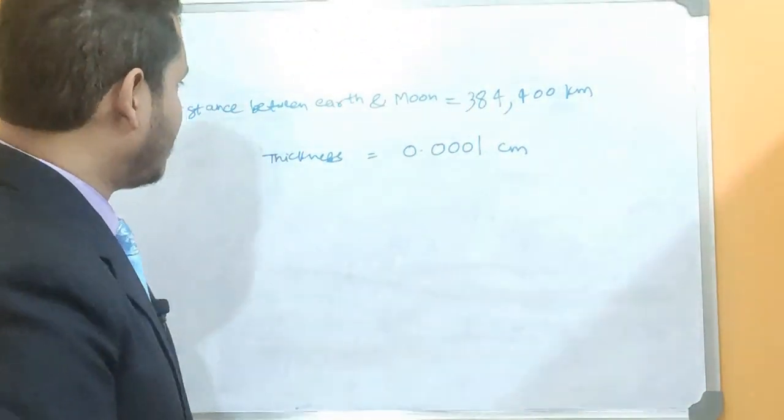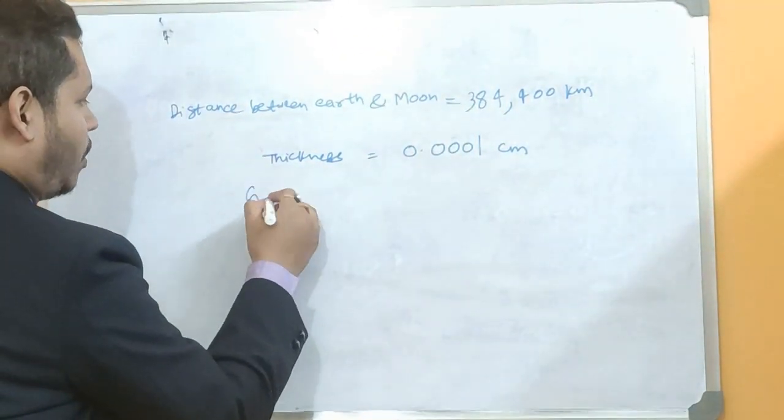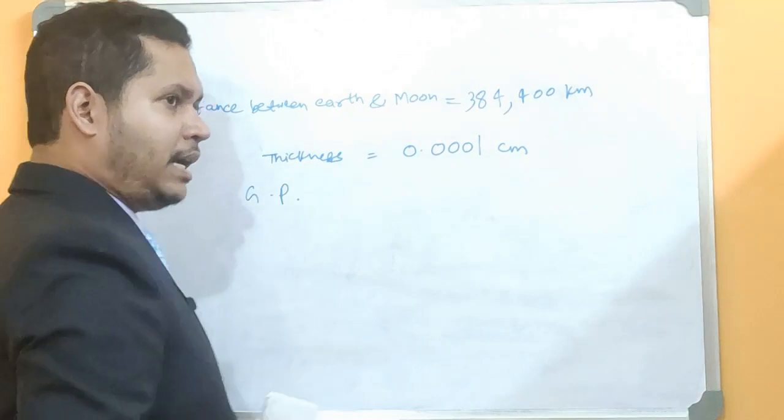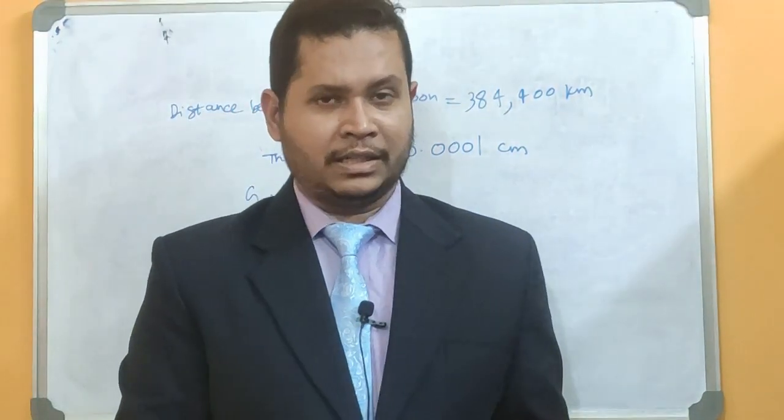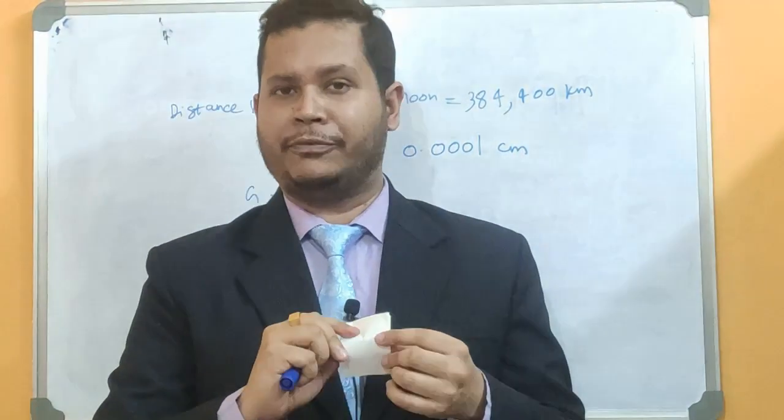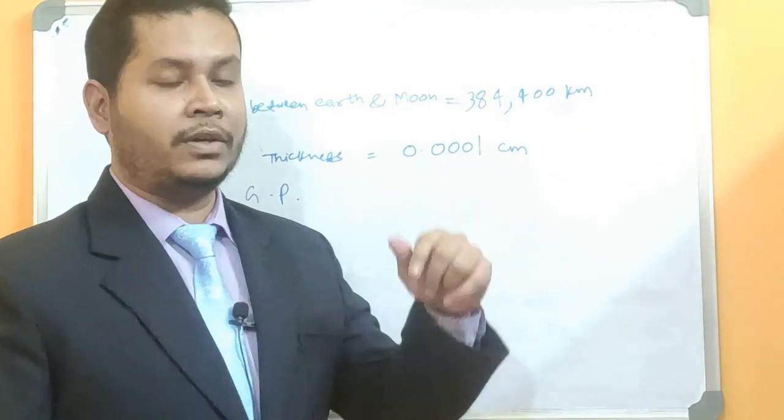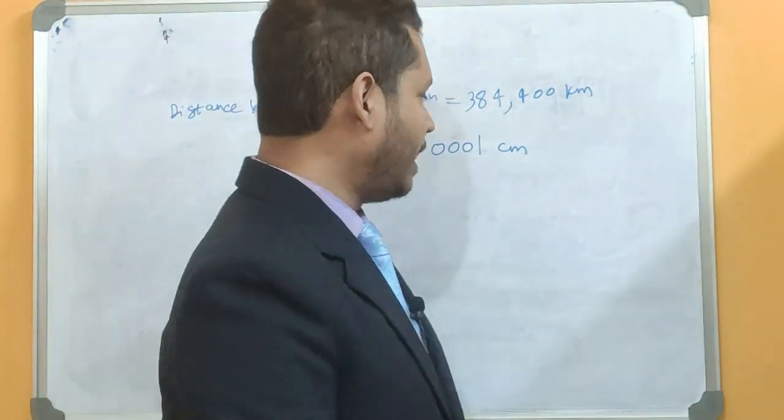But if you have to understand this concept, you should be either a student of class 10 or more than that. Okay? Because for this we will be using a concept that is called Geometric progression or GP. Using the concept of GP will prove it that if I fold this paper 50 times I will cross the distance between the earth and the moon. So let's see it. Okay?